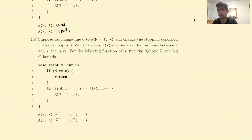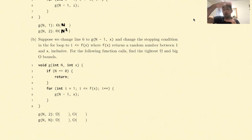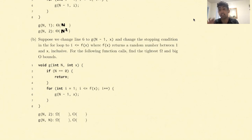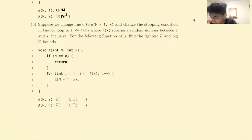For the following function calls, find the tightest omega and big-O bounds. An omega bound, or tight omega bound, is a bound that says the runtime of this function will never be faster than this bound. A big-O bound says the runtime will never be worse than this bound. The easiest way to find omega and big-O bounds is to think about the best and worst case behavior of a function.